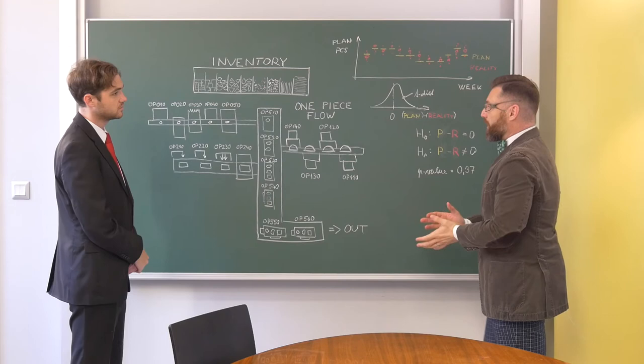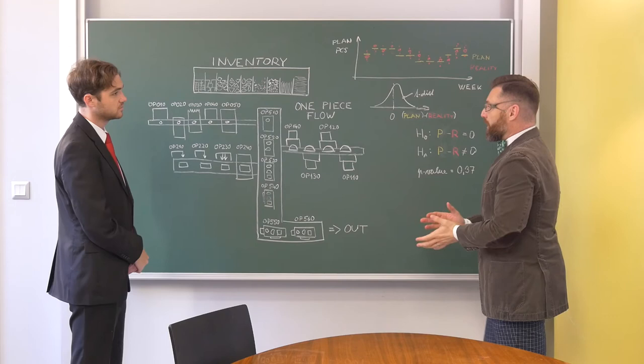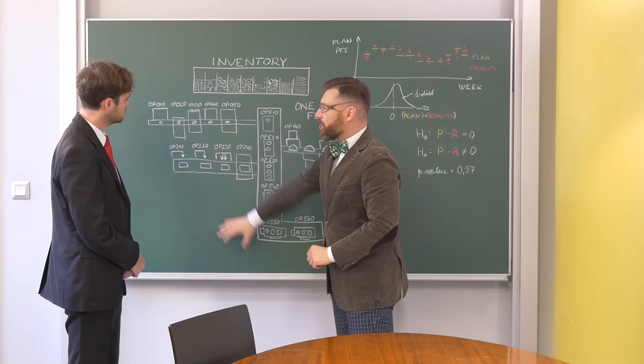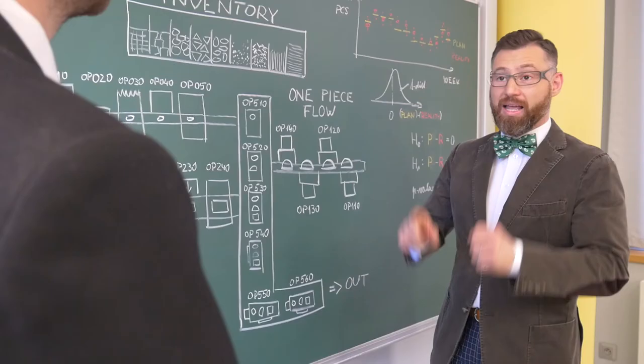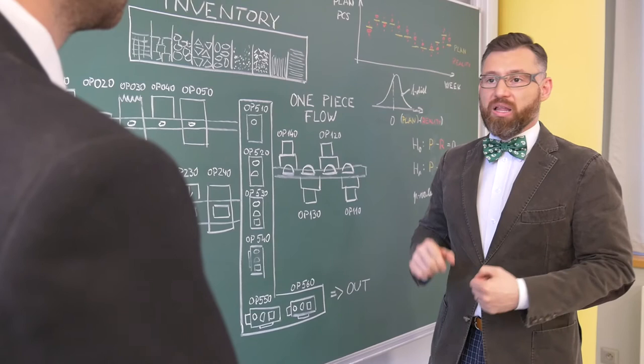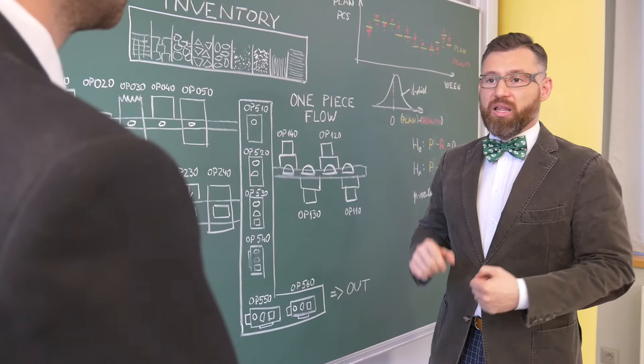Well, there will always be some risk that the inventory will not cover the production's demand. What you need is to define the level of acceptable risk that this will happen. And now to the one-piece flow. It sounds well in theory. You only work with the number of parts you really need. Everything is planned to the last screw.